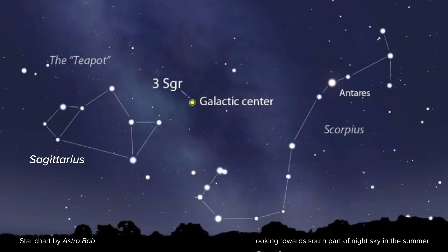The teapot is the group of stars shown on the left side of this star chart. There's a handle on the left side of this group of stars and a spout on the right side. If you're in a dark enough location, you may even be able to make out the Milky Way as a fuzzy streak of light to the right of the teapot. The center of the galaxy is right off of the spout of the teapot, a little ways out in between the constellations Sagittarius and Scorpius.